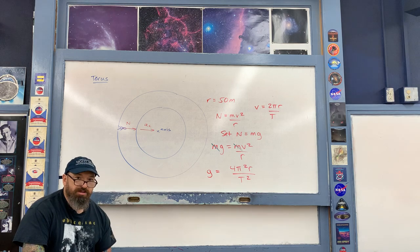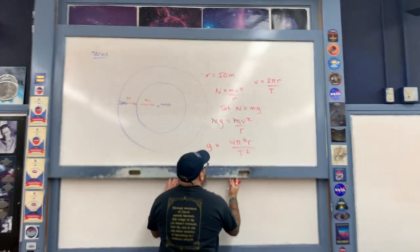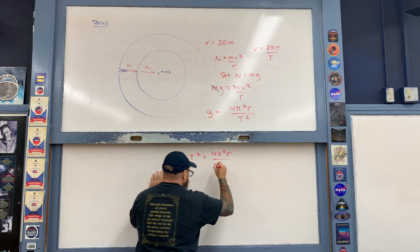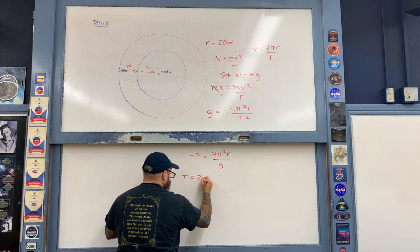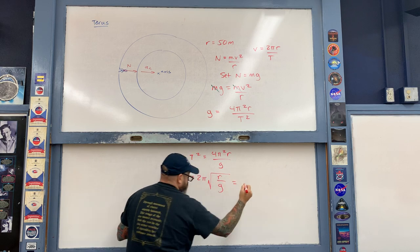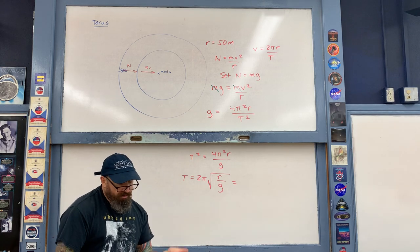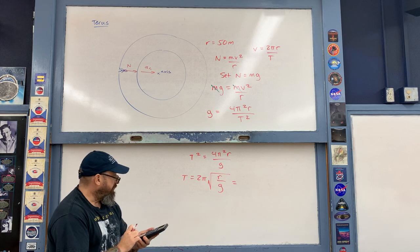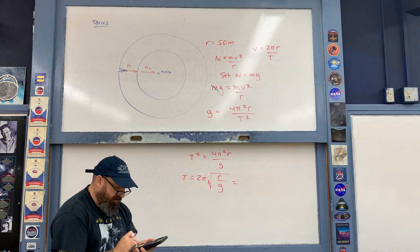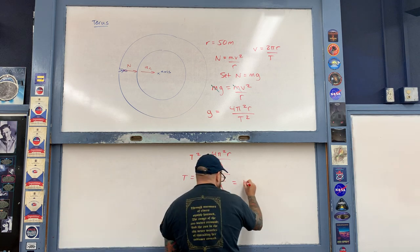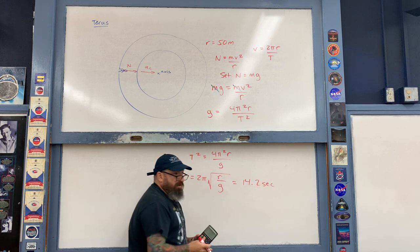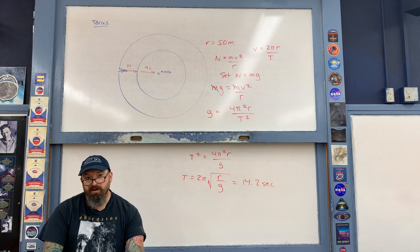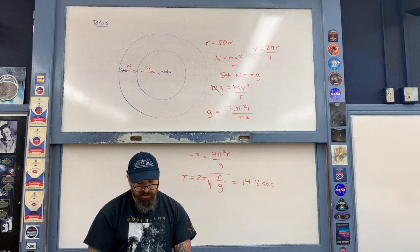Now, substituting in for speed V, squaring each of the terms and canceling a radius, then cross-multiplying and taking the square root of both sides, we can solve for the period. Plugging in: two times pi, multiplied by the square root of r divided by g — so 50 divided by 9.8 — this comes out to about 14.2 seconds, almost 15 seconds. So we have to rotate this thing basically four times per minute in order for inhabitants inside the space station to feel as if they're standing on Earth.